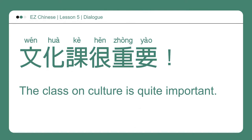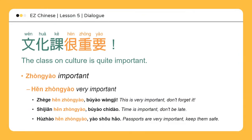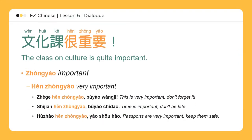文化课很重要。The class on culture is quite important. 重要 means important; 很重要 means very important. 这个很重要，不要忘记。This is very important — don't forget it. 时间很重要，不要迟到。Time is important — don't be late. 护照很重要，要收好。Passports are very important — keep them safe.